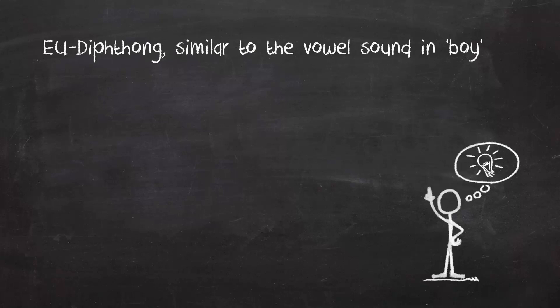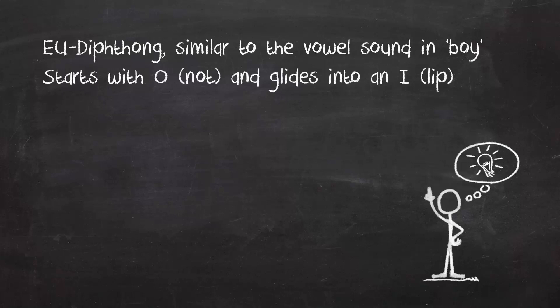Let's move on to the third and last diphthong: OI. The corresponding English sound can be found in the word 'boy'. It starts with an O sound as in 'not' and then glides into an E sound as in 'lip'. Again, the transition is very fast. The OI diphthong can be spelled EU or ÄU, and both combinations are pronounced in the same way.